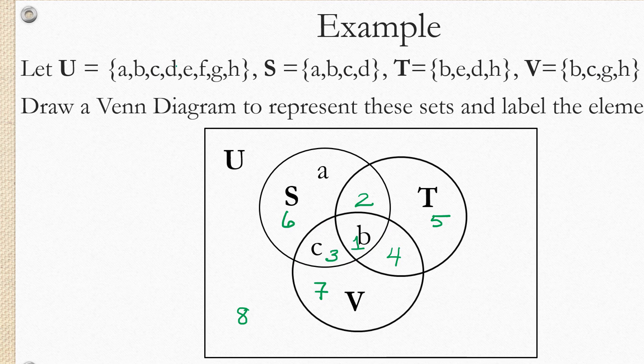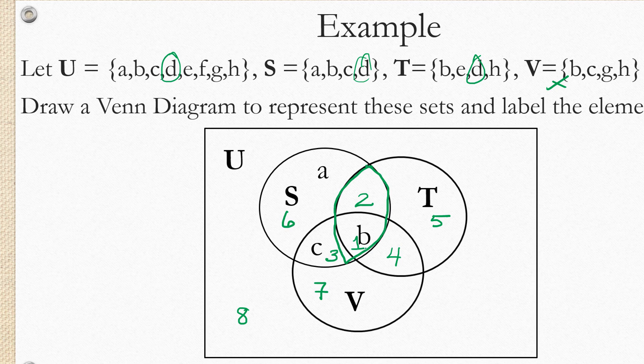How about element D? Element D is in S and it's in T, but it's not in V. So S and T overlap here with regions one and two. We have one more piece of information. It's not in V and region one is in V. So it must be that D is in region two.